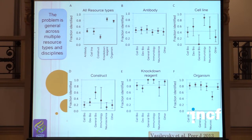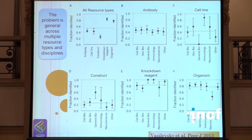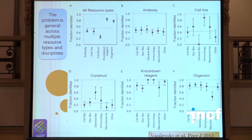Lo and behold, we are not doing all that well. If you look across this graph, these are the individual reproducibilities or identifiabilities of these reagents — antibodies, cell lines, constructs, knockdown reagents, and organisms. Out of the total number of papers and antibodies found by a curator, less than 50% were actually able to be identified back at the manufacturer's website. So this is not great. These are fairly recent papers.